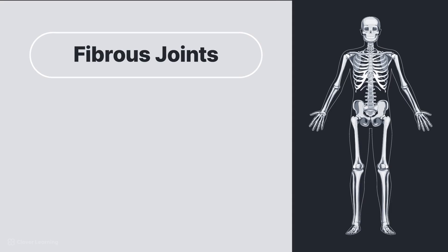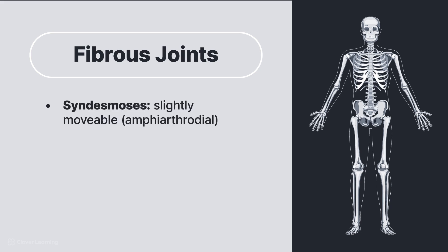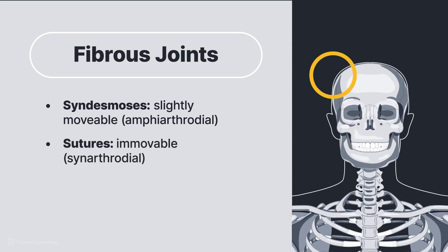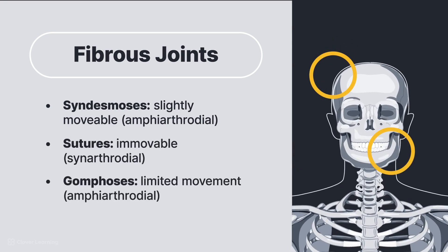Fibrous joints lack a joint cavity and are held together by fibrous connective tissue. The three types of fibrous joints are syndesmosis, which are slightly movable or amphiarthrodial; sutures, which are immovable or synarthrodial; and gomphoses, a unique type of joint with limited movement or amphiarthrodial.